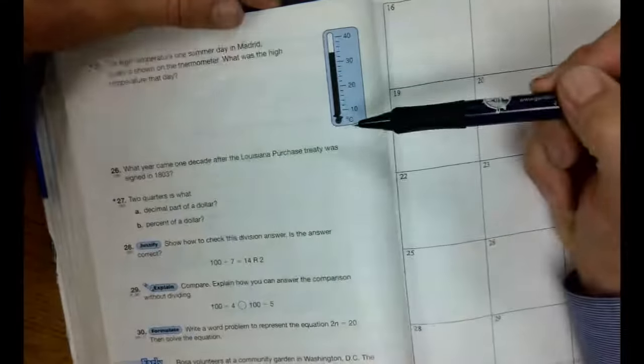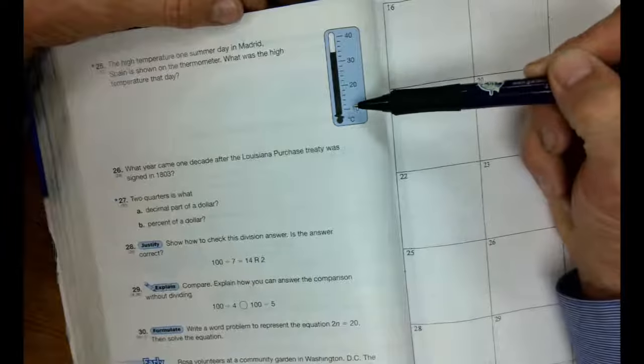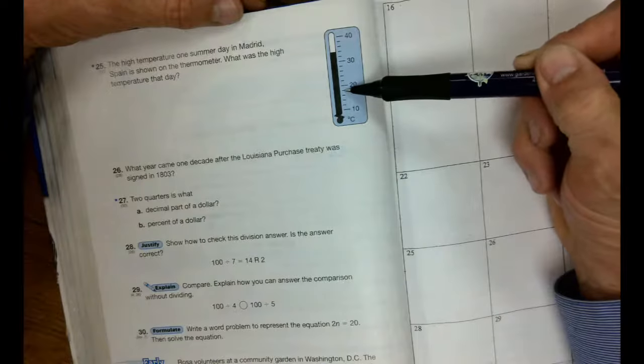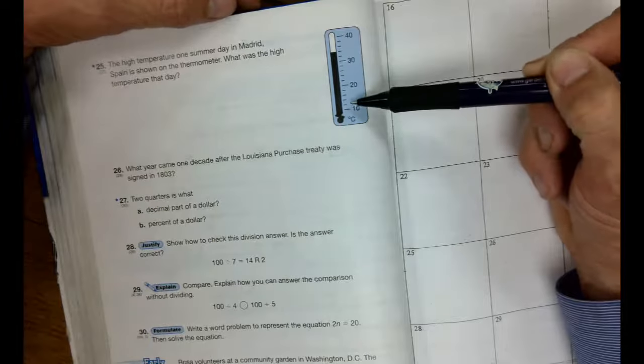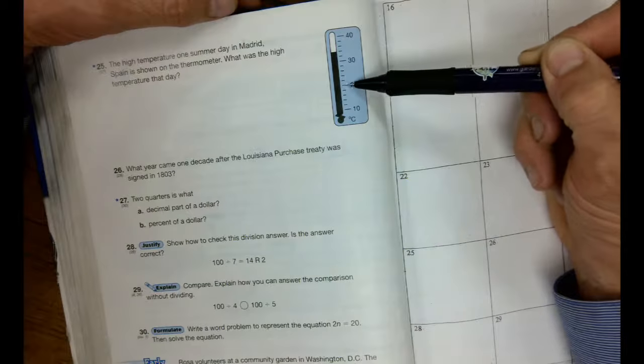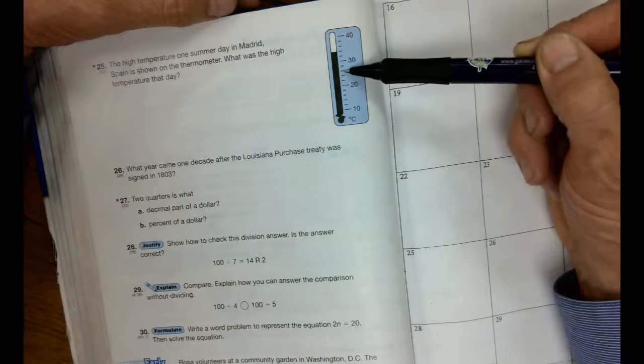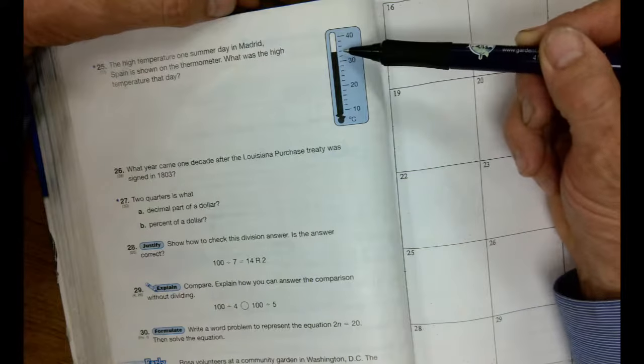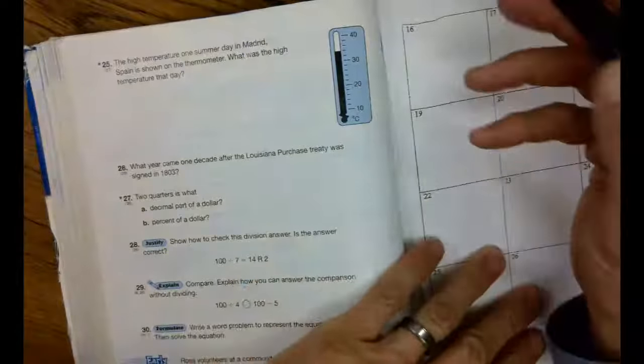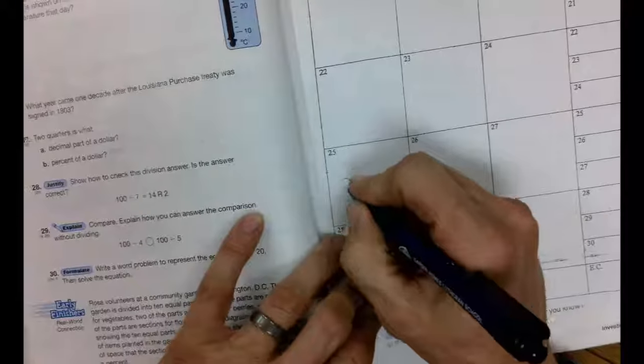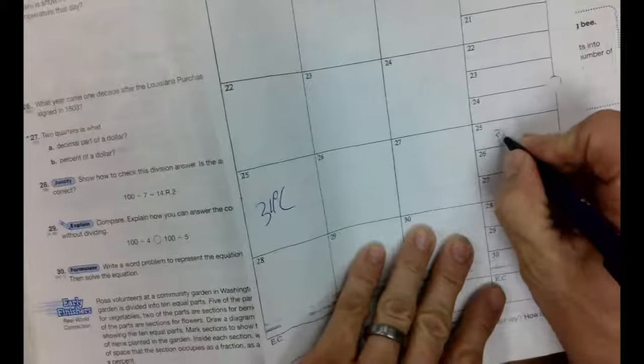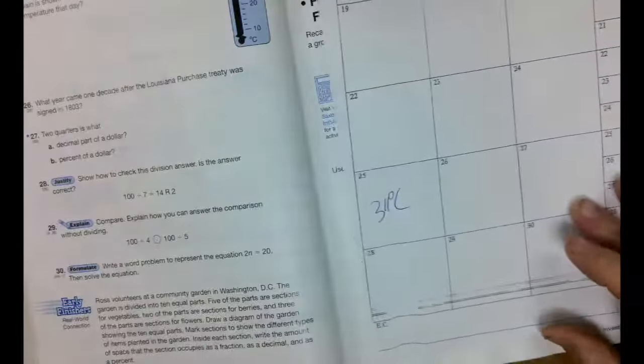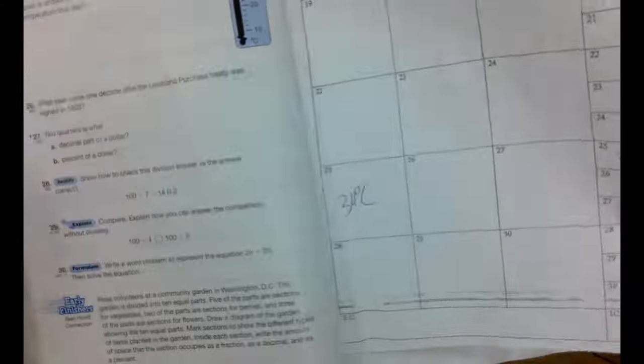Celsius degrees. 10, 20, 30. What are we going up by? Well, let's count by ones. 10, 11, 12, 13, 14, 15. It's not ones. Let's count by twos. 10, 12, 14, 16, 18, 20. Ding, ding, ding. 22, 24, 26, 28, 30. Ding, ding, ding. 32, 34 degrees Celsius. All right.